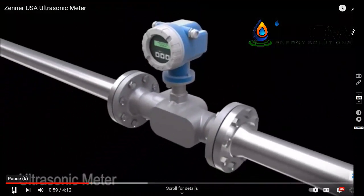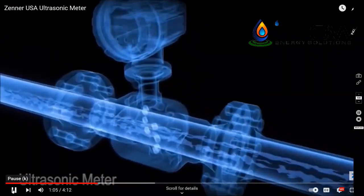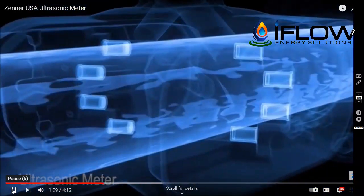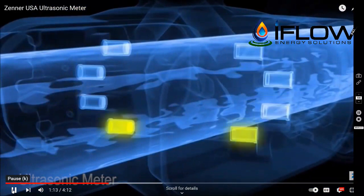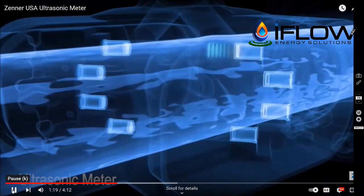Here is how this measurement method works. Inside the ultrasonic flow meter, pairs of sensors are fitted across from each other in the measuring tube. Each sensor can alternately transmit and receive an ultrasonic signal. Simultaneously, the transit times of these signals are measured.